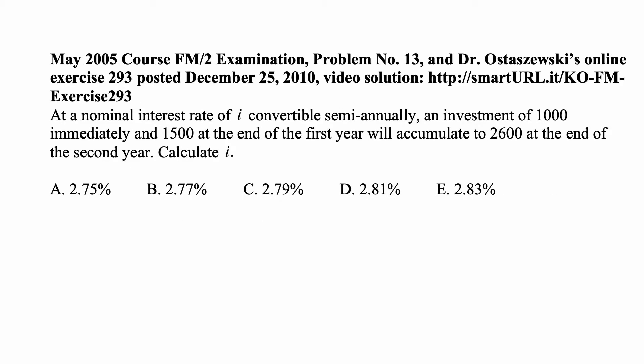Here's the problem for today for exam FM on financial mathematics. At a nominal interest rate of I convertible semiannually, an investment of 1,000 immediately and 1,500 at the end of the first year will accumulate to 2,600 at the end of the second year. Calculate I.